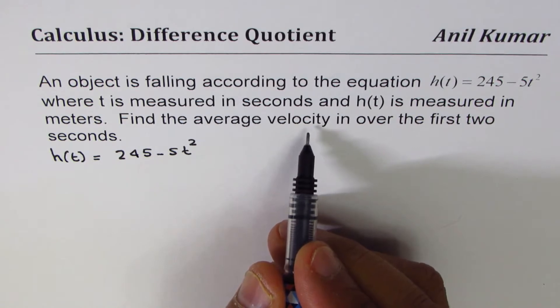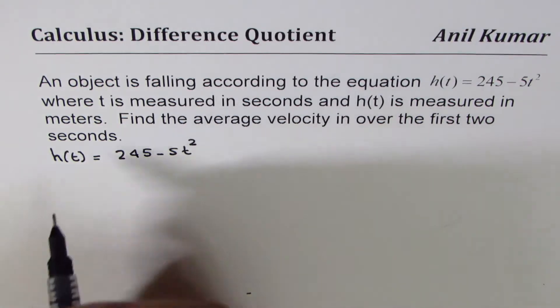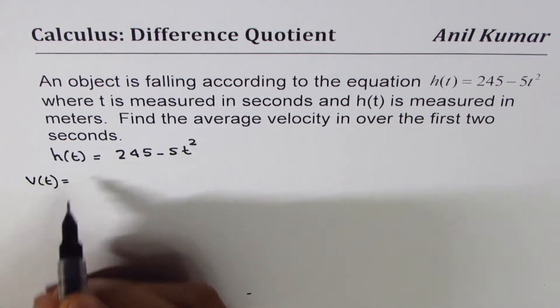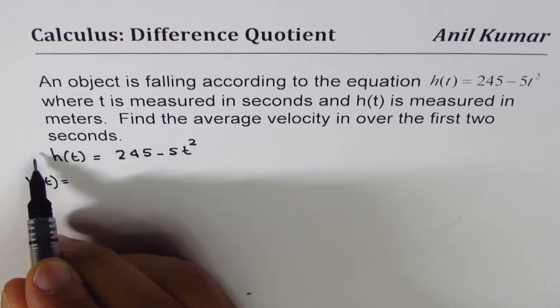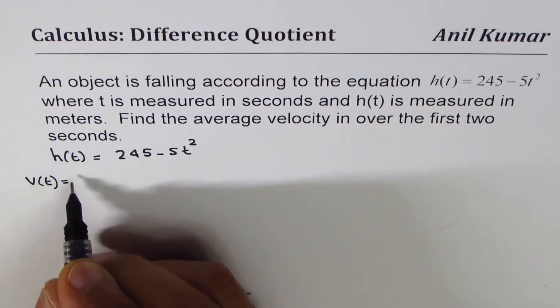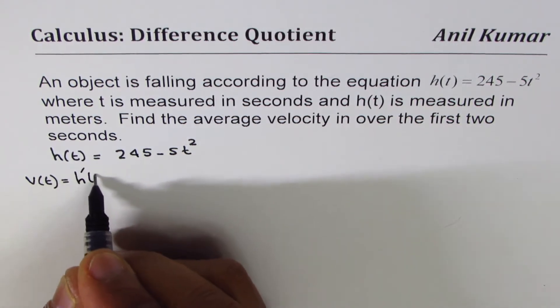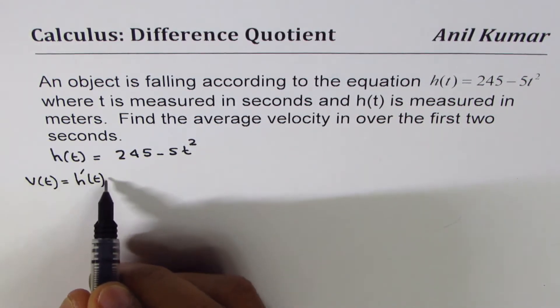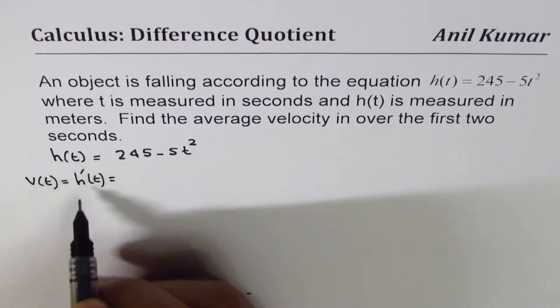Velocity is rate of change of position. So if you want to find velocity, we have to find rate of change of height, which we may write as h'(t) or dh/dt. Change in height over time.